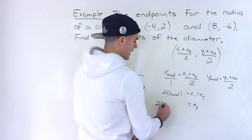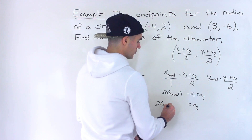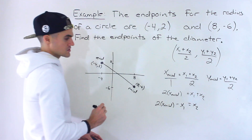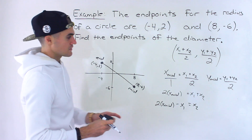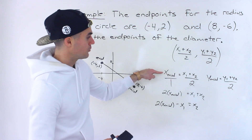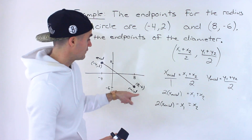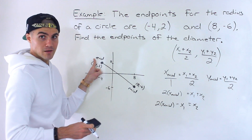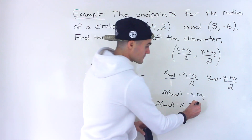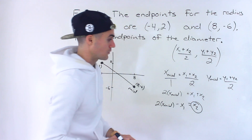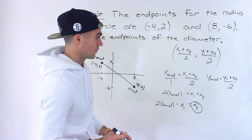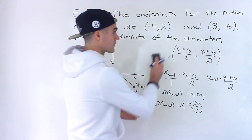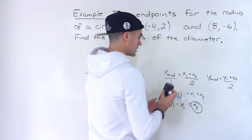So we get x2 equals 2 times the x-value of the midpoint minus x1. Instead of solving for the midpoint, because we're given the midpoint and one endpoint, we're solving for the x-value of the other endpoint. The same formula applies for y: y2 equals 2 times the y-value of the midpoint minus y1.